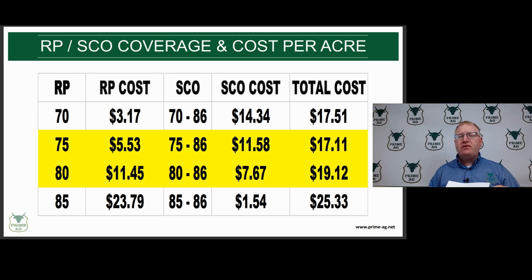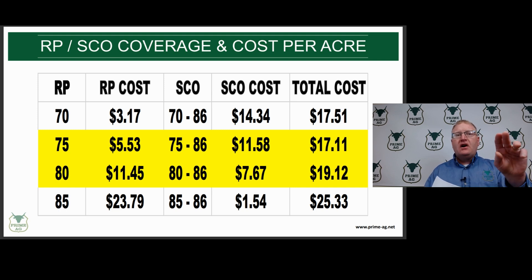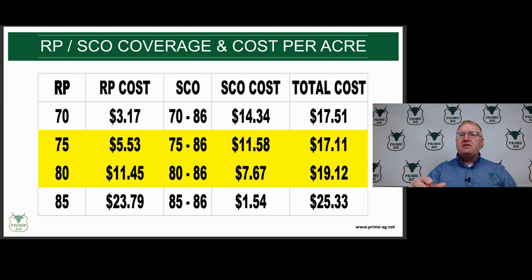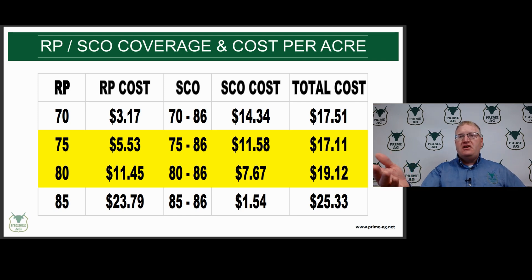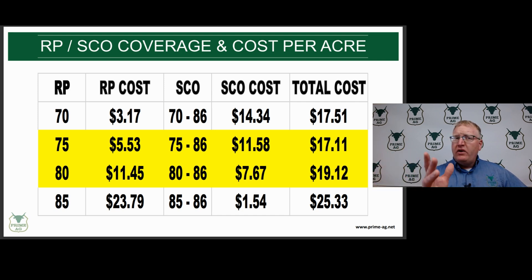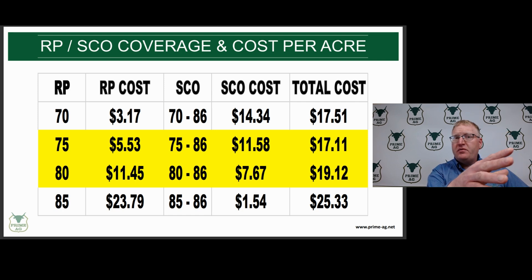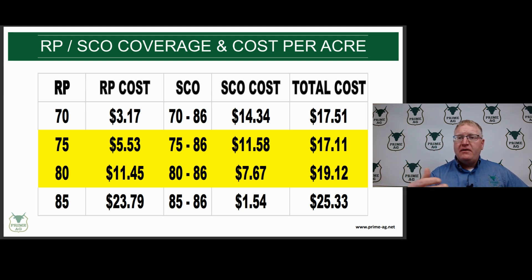We've got four different coverage levels on revenue protection for this producer with the 210 APH. Looking at the two with the yellows as our focus: our revenue protection policy is going to cost $5.53 an acre. We add our SEO on top of it of $11.58, giving us a cost of $17.11 an acre. At 80% revenue protection, our cost is $11.45 an acre. You add the SEO at $7.67, which gets us to $19.12. If the producer's yield is above the county, we'd suggest 80% revenue protection with SEO. If yield is below the county average, we'd go down to 75% coverage and put SEO on top.